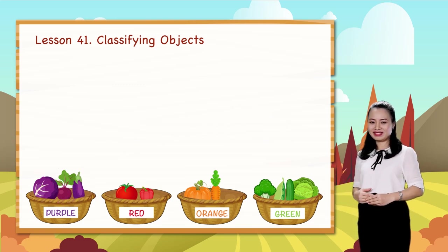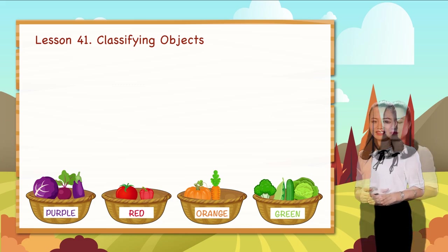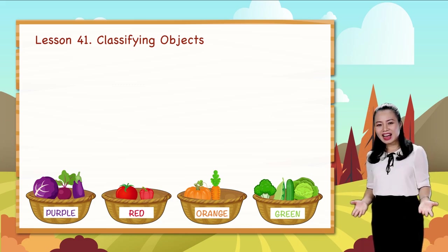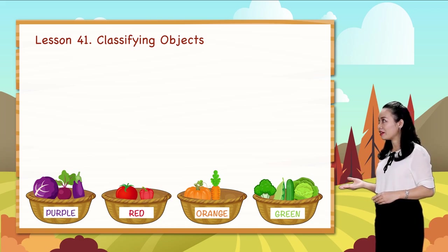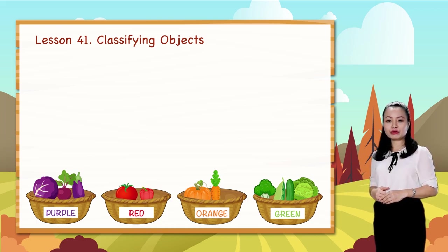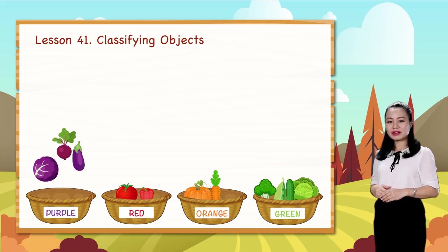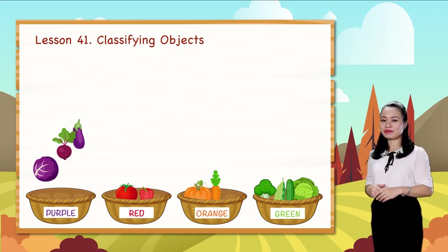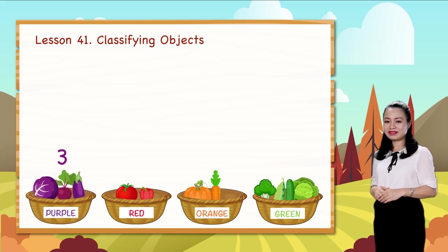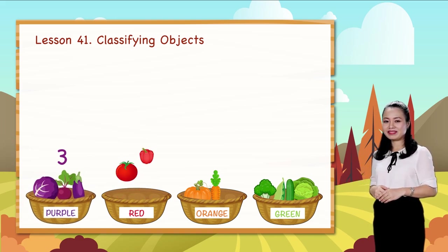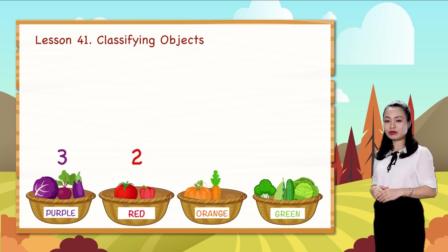A cabbage, paste it into the green group. Now let's count to find how many vegetables are in each group. One, two, three — so there are three vegetables in the purple group. One, two — so there are two vegetables in the orange group.